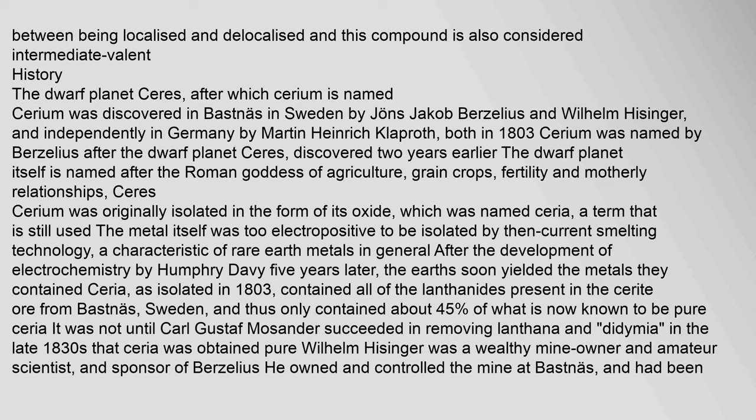Cerium was discovered in Bastnäs in Sweden by Jöns Jakob Berzelius and Wilhelm Hisinger, and independently in Germany by Martin Heinrich Klaproth, both in 1803. Cerium was named by Berzelius after the dwarf planet Ceres, discovered two years earlier. The dwarf planet itself is named after the Roman goddess of agriculture, grain crops, fertility, and motherly relationships. Cerium was originally isolated in the form of its oxide, which was named ceria — a term still used. The metal itself was too electropositive to be isolated by then-current smelting technology, a characteristic of rare earth metals in general.